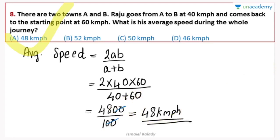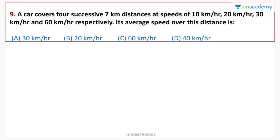The formula 2ab/(a+b) is very important for average speed questions. Let's take a look at the next question. A car covers 4 successive 7 km distances at speeds of 10 kmph, 20 kmph, 30 kmph, and 60 kmph respectively. What is its average speed over this distance?